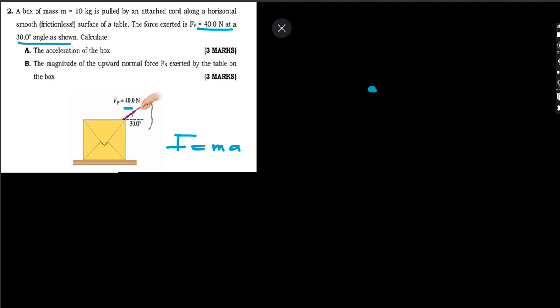Let's draw the free body diagram. The free body diagram should only show forces, so this is going to be the box. This is the force which was applied at an angle of 30 degrees. Acting downward there is the weight force. And since the object is resting on a surface, there is always a force applied by the surface on the object, which we call the normal force, and it goes upwards.